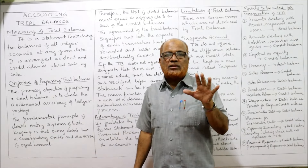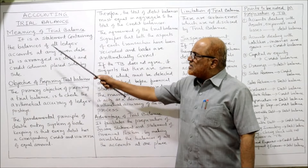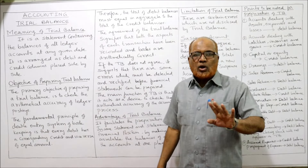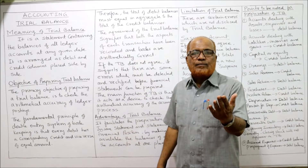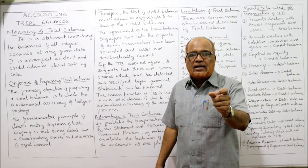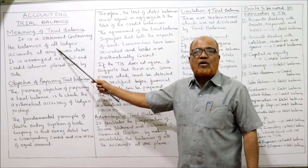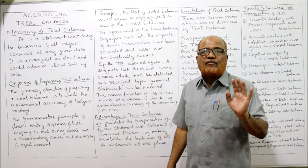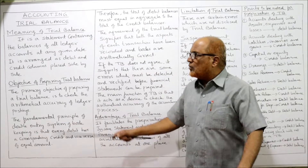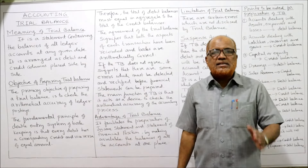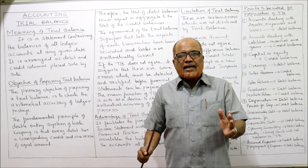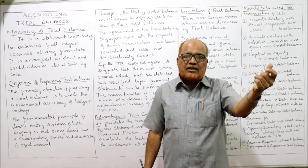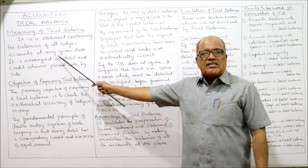The meaning of trial balance: it is a statement containing all the ledger balances. It is not an account — trial balance is only a statement which lists all the debit and credit balances of ledger accounts at a given date. It is arranged as debit and credit columns placed side by side. All debit balances go in the debit column and all credit balances go in the credit column.